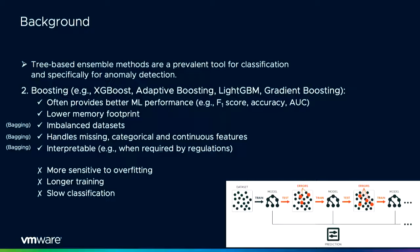Because boosting tries to improve the error of the previous decision tree at every iteration, it often provides better machine learning performance. It also has a much lower memory footprint since each decision tree is relatively more shallow compared to random forest. Similar to bagging, it can handle imbalanced datasets, missing features, and small training datasets. It can also be explained, though it is much harder than explaining a random forest.